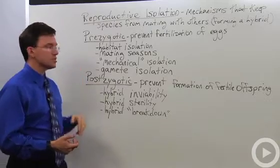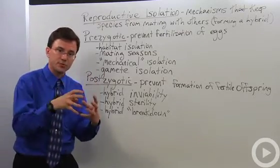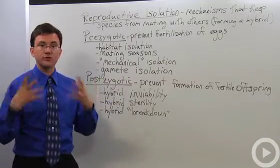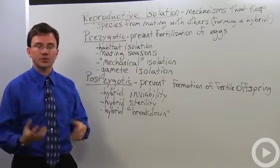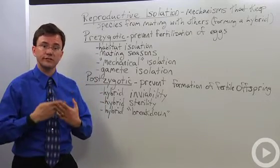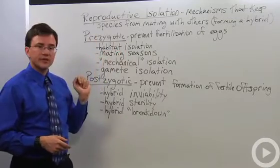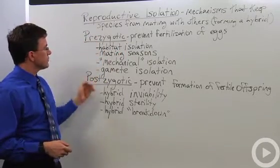As compared to the postzygotic reproductive isolating mechanisms, those are, okay, we've got the sperm to the egg. This is what prevents the formation of a fertile, viable hybrid offspring. And just in case I didn't say it before, a hybrid is a cross between two different species.